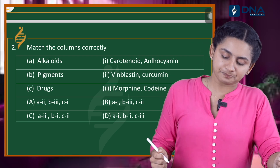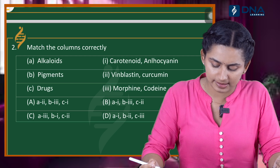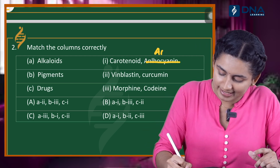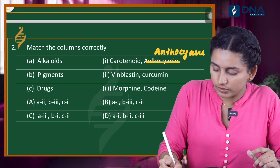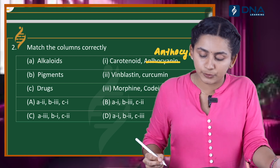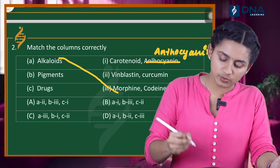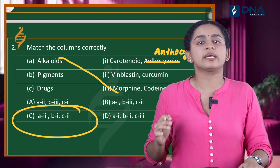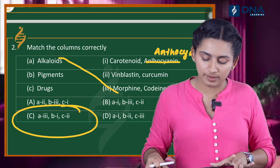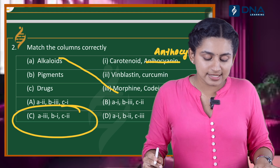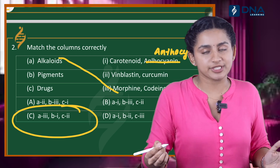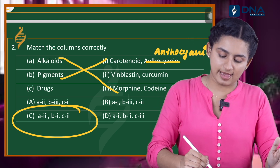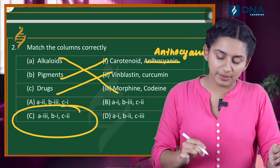First one is alkaloids. The options to match include carotenoids, anthocyanin, vinblastine, curcumin, morphine, and codeine. Option B, pigments, are carotenoids and anthocyanin. Option C, drugs, are curcumin and vinblastine. Option A, alkaloids, are morphine and codeine. So the matching is A-3, B-1, C-2.